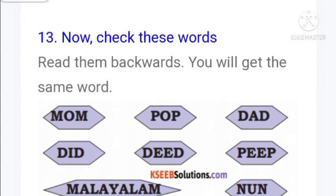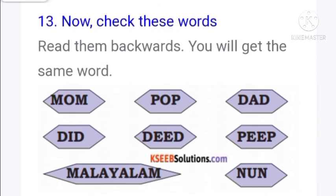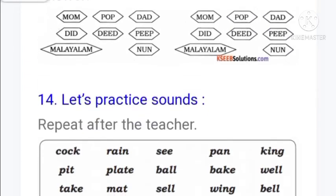Now check these special words. Read them backwards and you will get the same word - these are called palindromes. Mom, pop, dad, did, peep, Malayalam, noon. If you turn and read them backwards, you will get the same words.